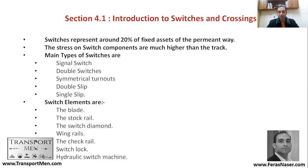There are several types of switches: single switch, double switch, symmetrical turnout, double slip, and single slip. The difference between a double switch and a double slip is that a double slip has a half-circle shape, while the diamond or double switch has a diamond shape.